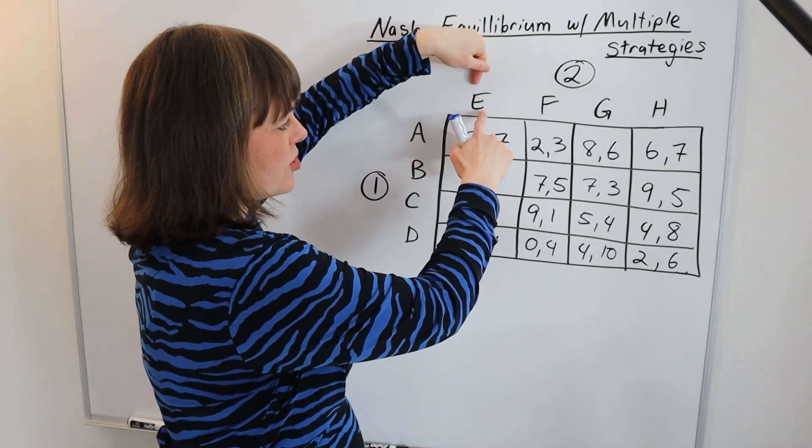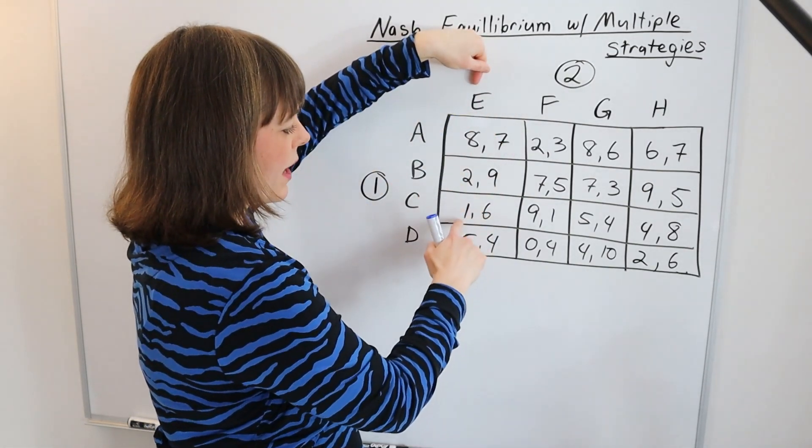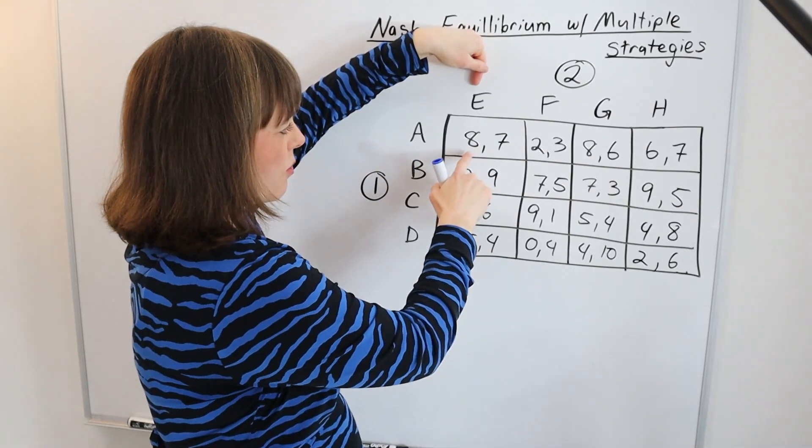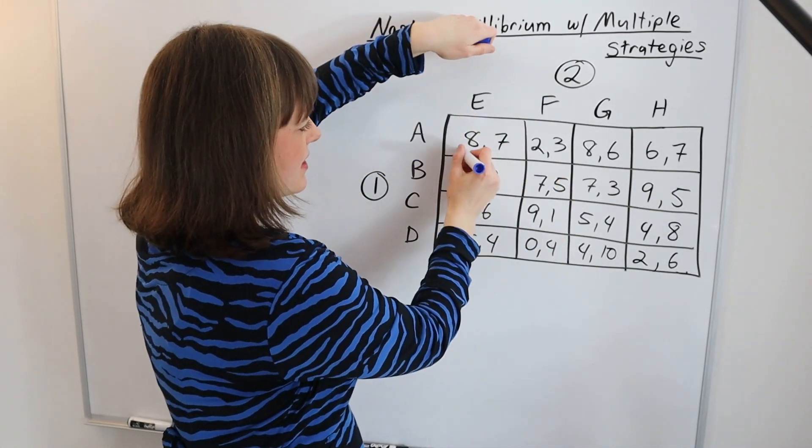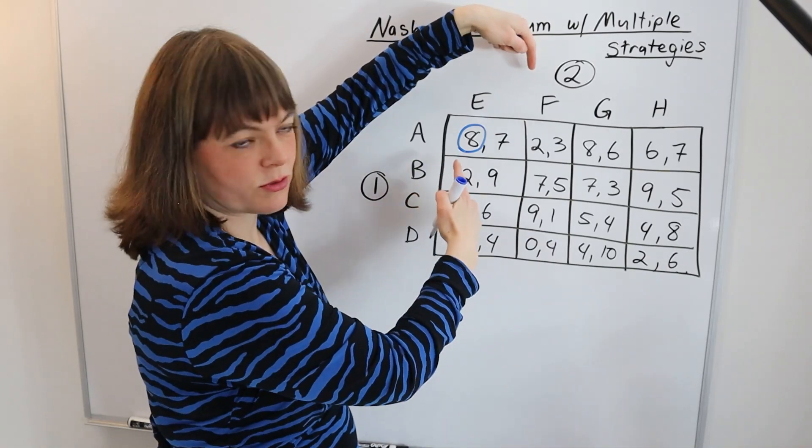So player one says, if player two chooses E, what will I wish I would have done? Player one says, I like the eight the best from those options. That's the best response.